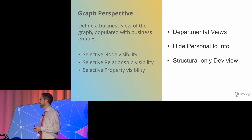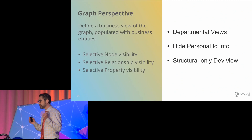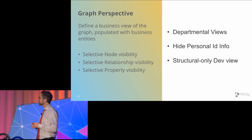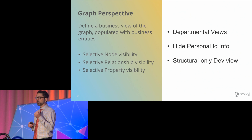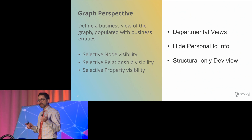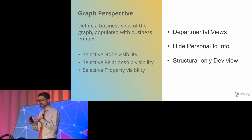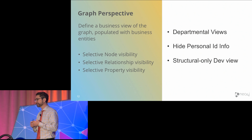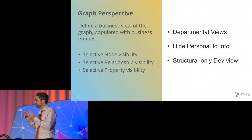For the graph perspective — a business view of the graph — this is defined by what node labels you have, what property keys you have, categorizing those into business entities, and how those business entities are related to each other. That's the fundamental idea: we want to recapture this business view, and that's the primary way you interact with the graph.